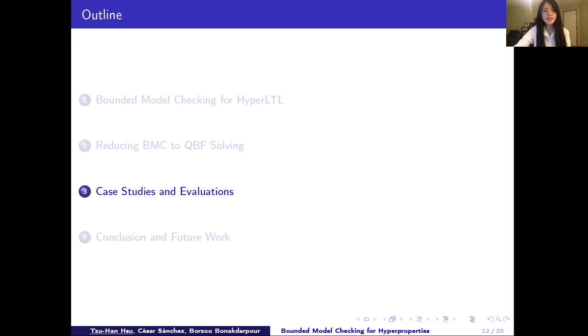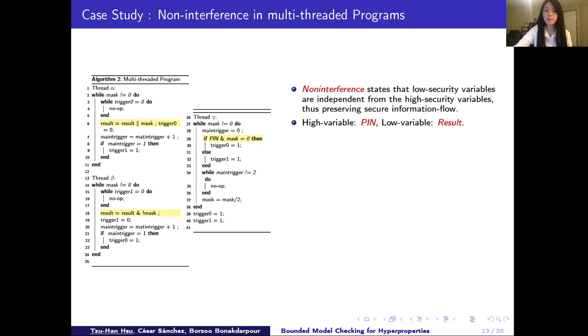In the last part, we select three case studies to present today out of our seven cases that we implement in the paper. The first one is verifying non-interference on a multi-threaded program. As we saw at the beginning, non-interference makes sure information flow between low variable and high variable is secure. In this program, we have pin as high variable and result as low variable. Without going too much into the detail of the program, in general, we have three different threads here that are controlling the value of pin and result.